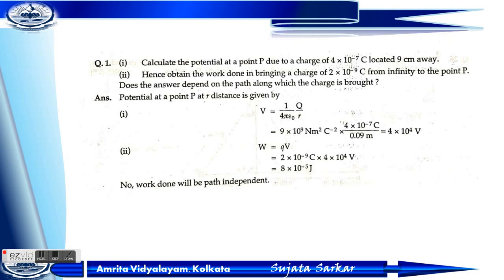Problem 1: Calculate the potential at point P due to a charge of 4×10⁻⁷ coulomb located 9 centimeters away. Hence, find the work done in bringing a charge of 2×10⁻⁹ coulomb from infinity to point P. Does the answer depend on the path along which the charge is brought? The potential difference at point P is given by V = (1/4πε₀)(Q/R).